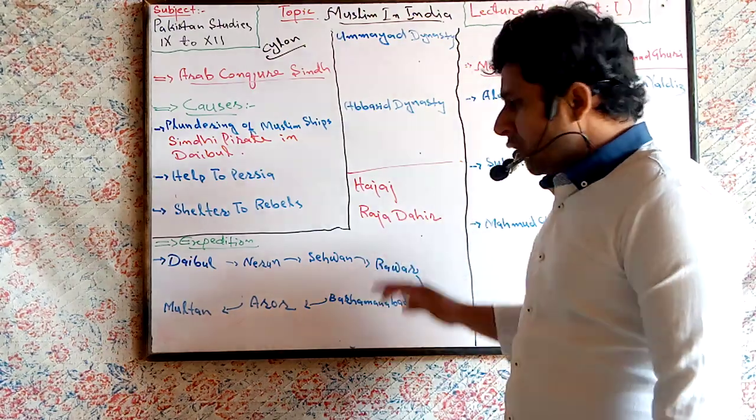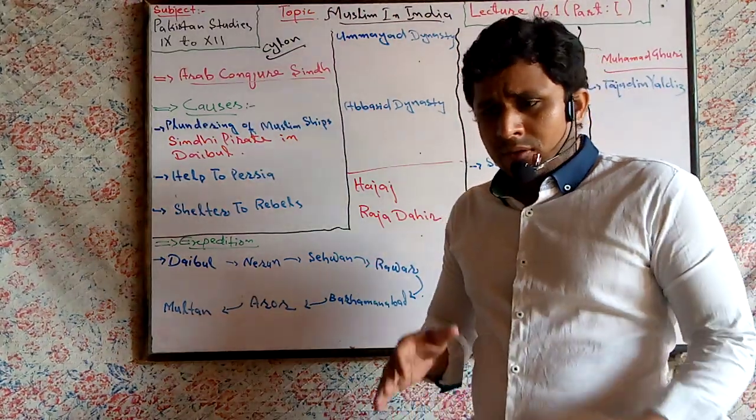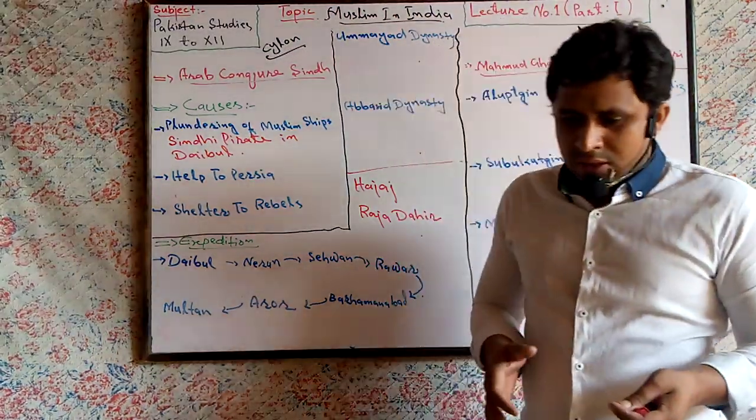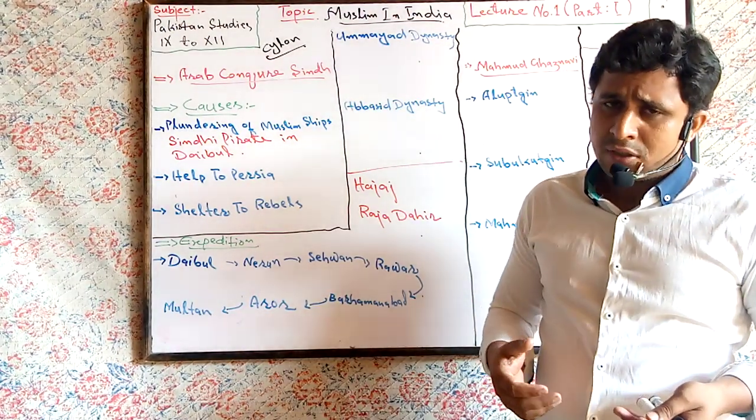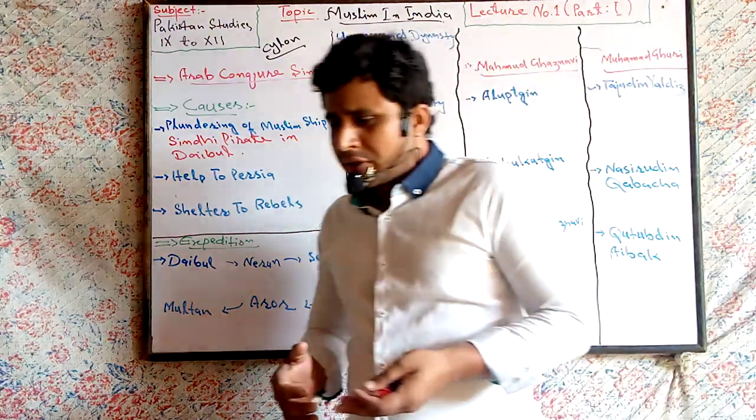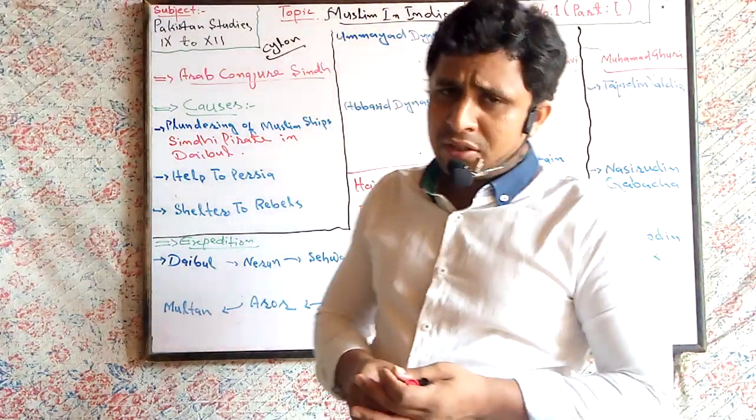Dear friends, Muhammad bin Qasim is a nephew and son-in-law of Hajjaj bin Yussef. Muhammad bin Qasim conquered Sindh in 712.